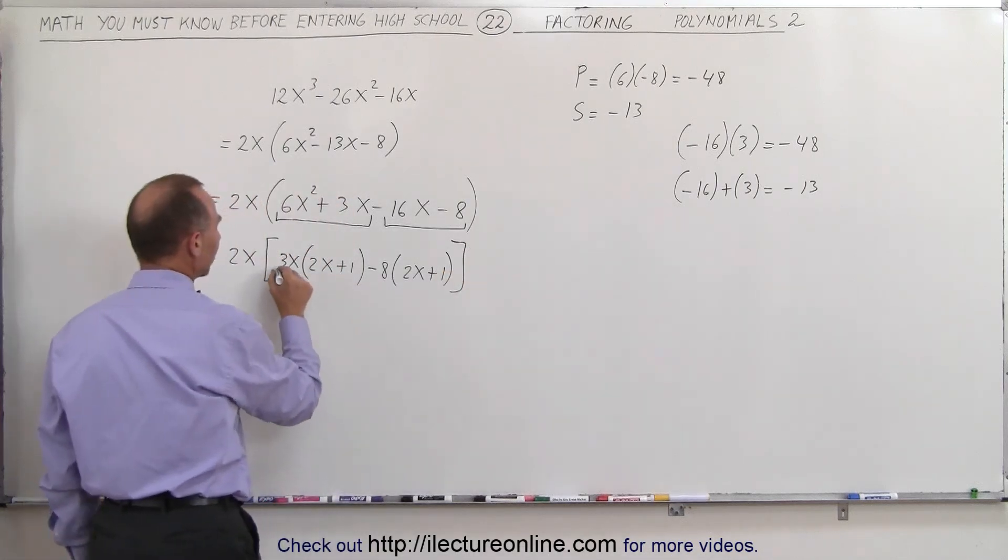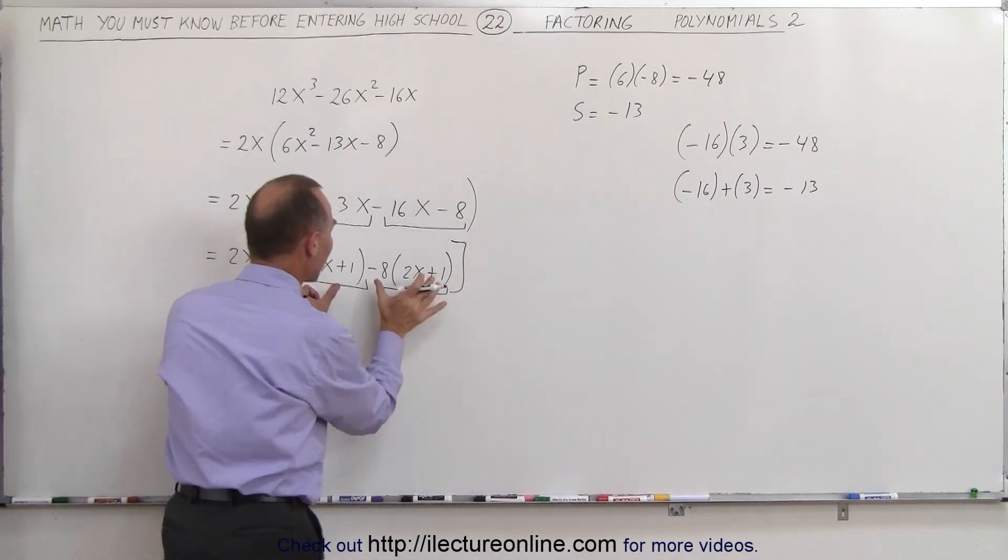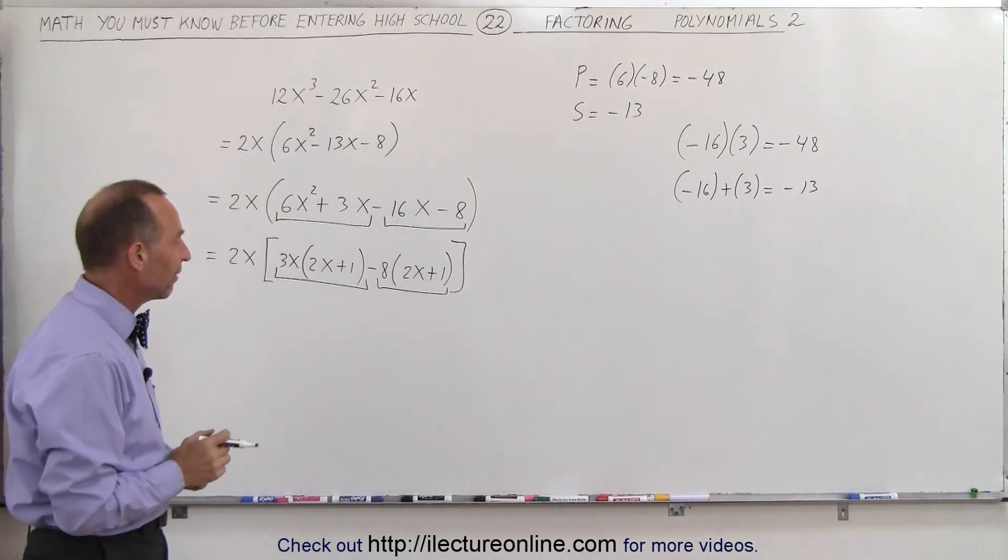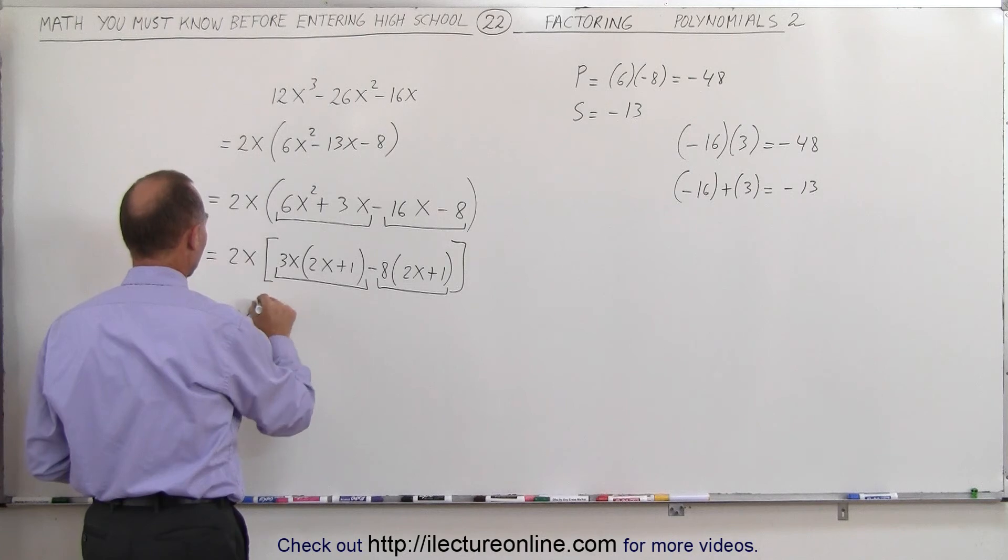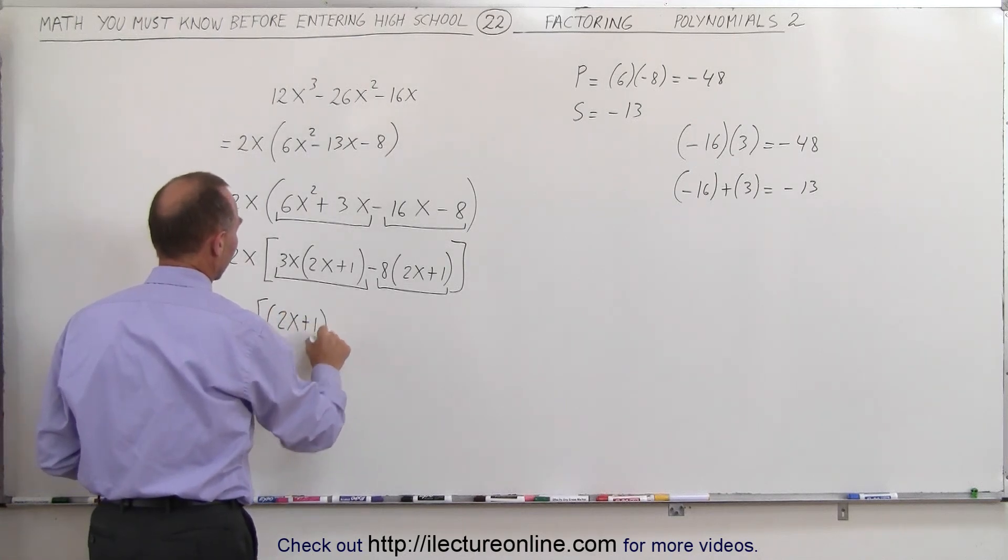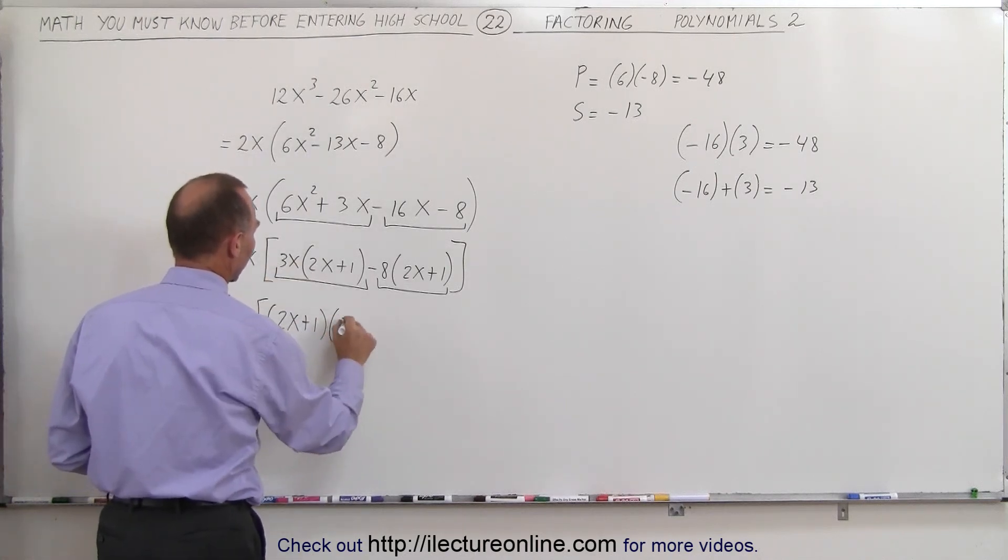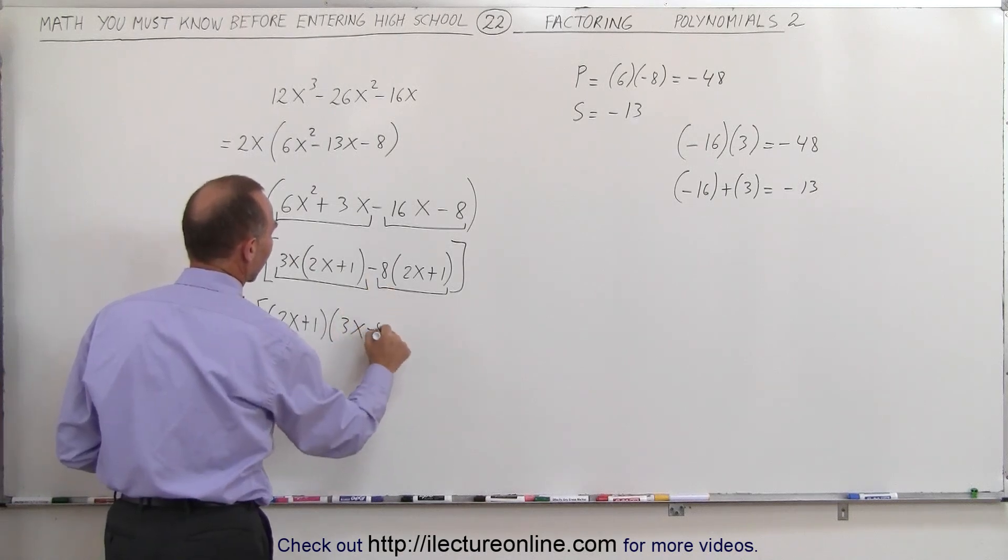Now realizing that if I look at this term and this term that they each have a 2x plus 1 that I can factor out, when I do that, I get 2x times 2x plus 1. And then I have left a 3x minus 8.